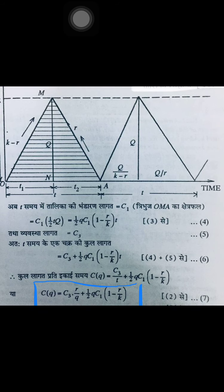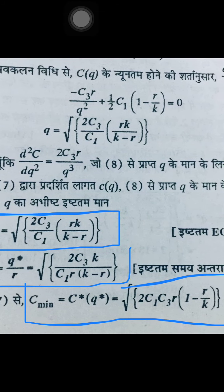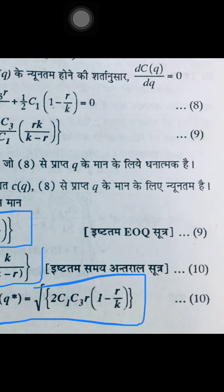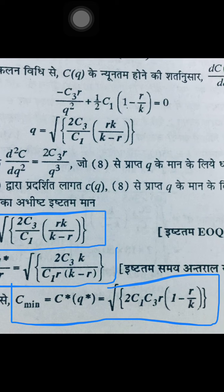Now on the next slide we apply the calculus method. To find the minimum of CQ we differentiate with respect to Q and set the first derivative equal to zero. The resulting value of Q gives us: Q* = √(2C3/C1 · RK/(K − R)). This is the value of the EOQ for this model.